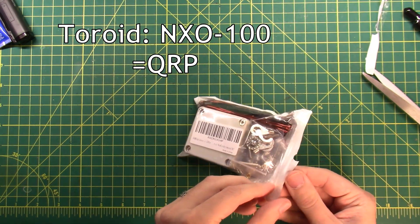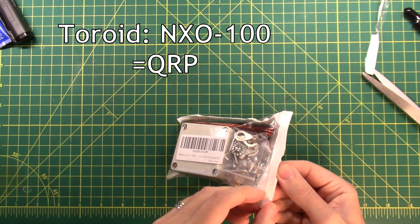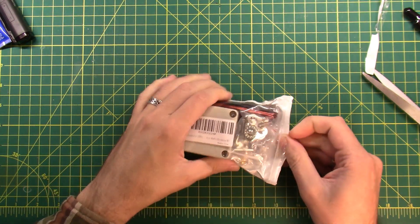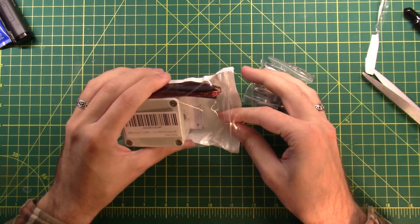Second, the toroid that is included in the kit was undocumented, so I don't know what it is. So what I did was I ordered known toroids from a known good supplier.